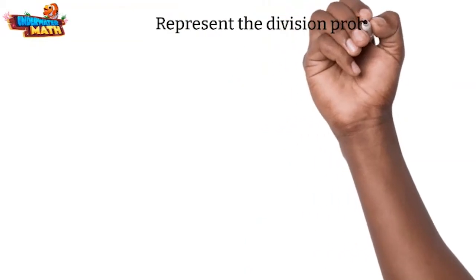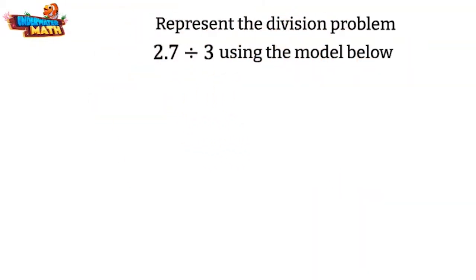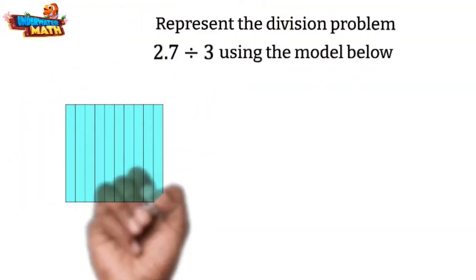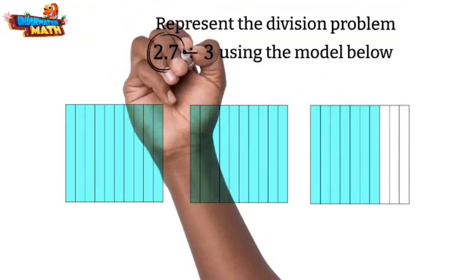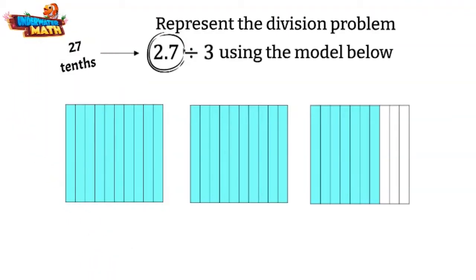Let's try another. Represent the division problem 2 and 7 tenths divided by 3 using the model below. This model shows two wholes and 7 tenths shaded in. This is a total of 27 tenths. Dividing 27 into three equal groups gets us 9 tenths in each group.